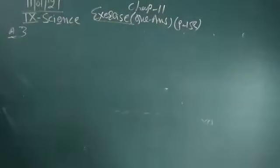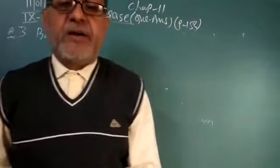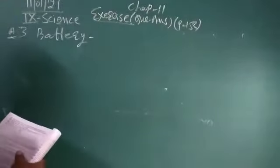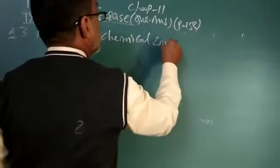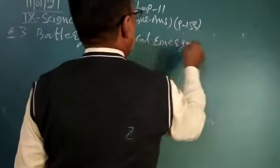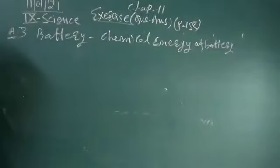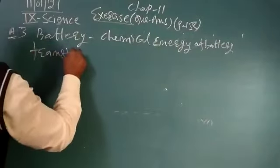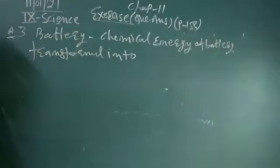You know that a battery contains chemical energy. And when it lights up, it produces heat energy. So you write: chemical energy of battery transfers into heat energy.